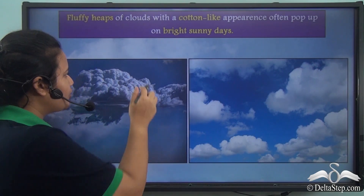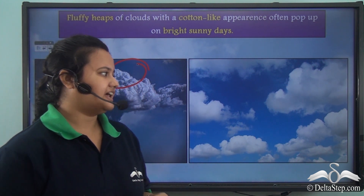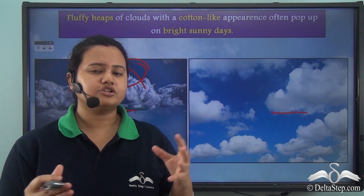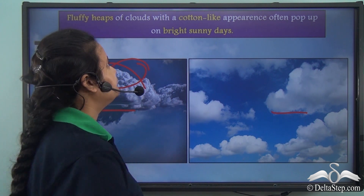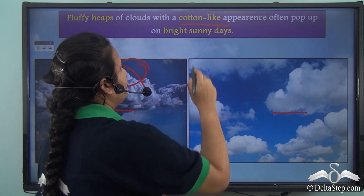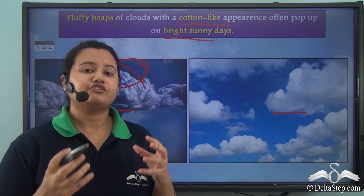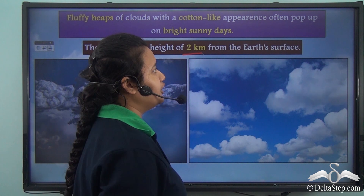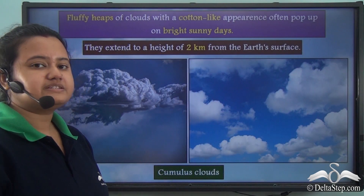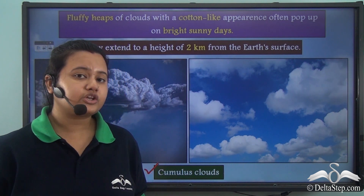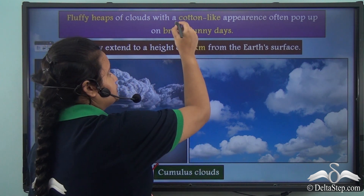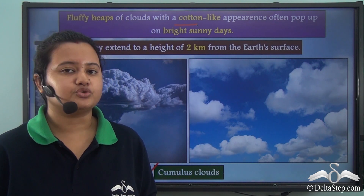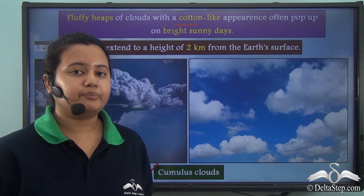These clouds look like a cauliflower — they have a flat base and a spherical top. Also, these clouds look like cotton balls. These fluffy heaps of cloud with a cotton-like appearance often pop up on bright sunny days and indicate fair weather. These clouds extend to a height of 2 km from the earth's surface and are known as cumulus clouds. When you see cumulus clouds, you know the weather is going to be pleasant.